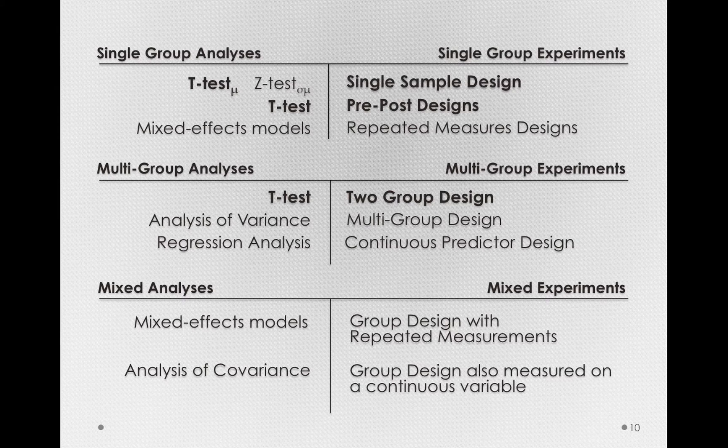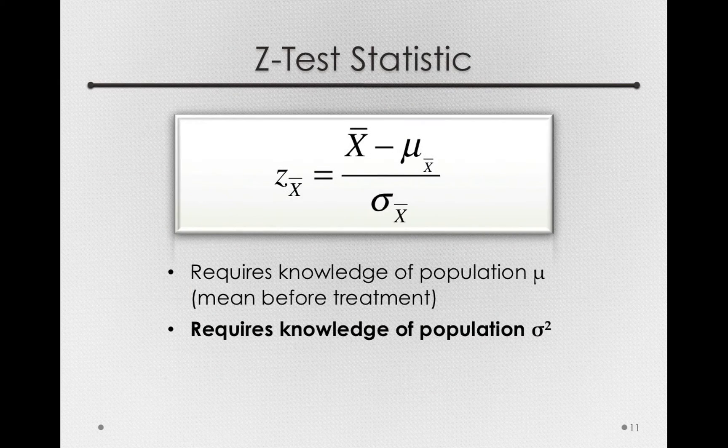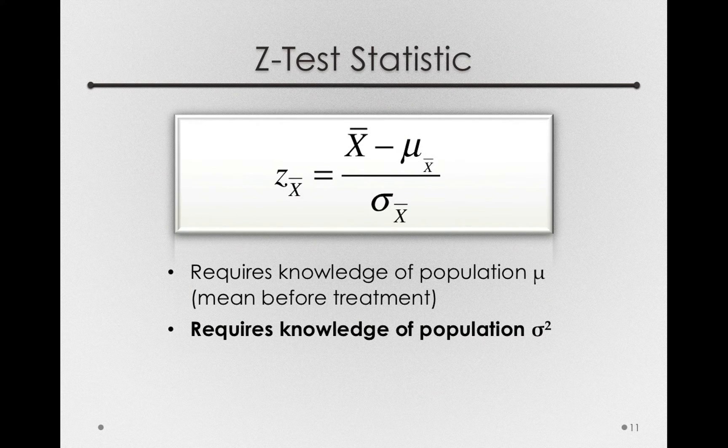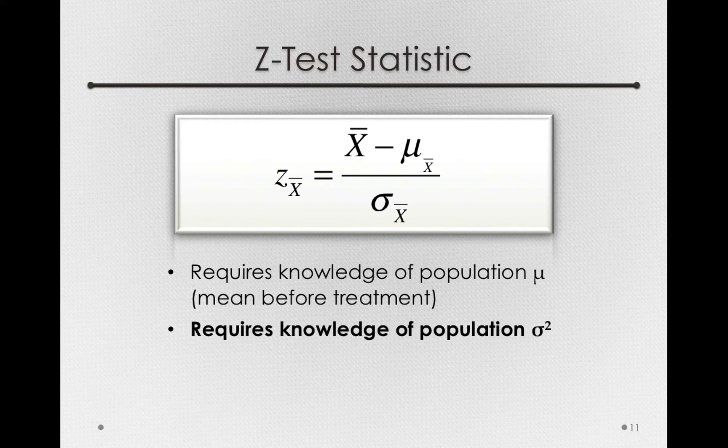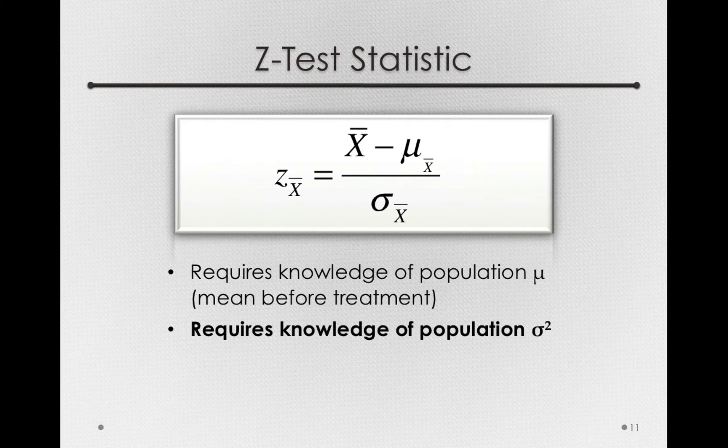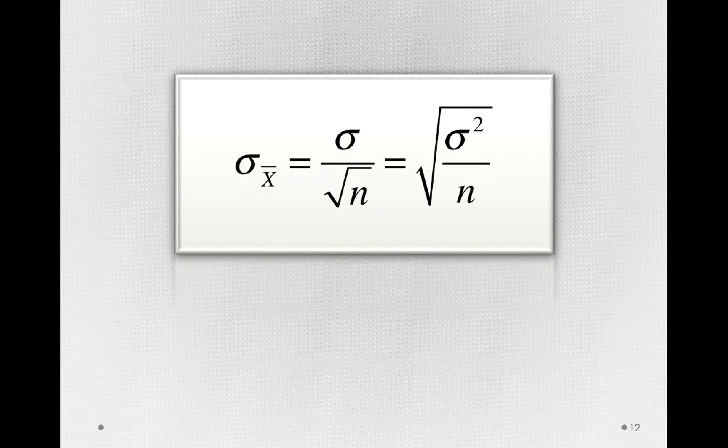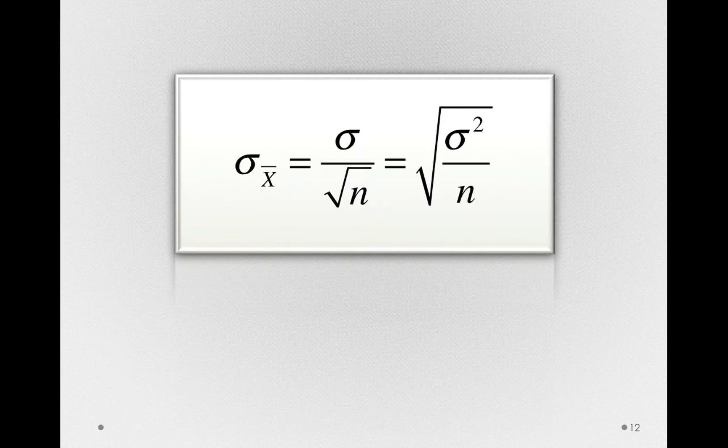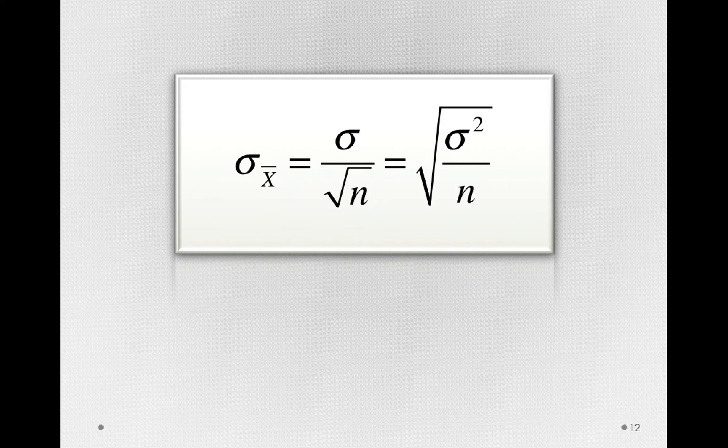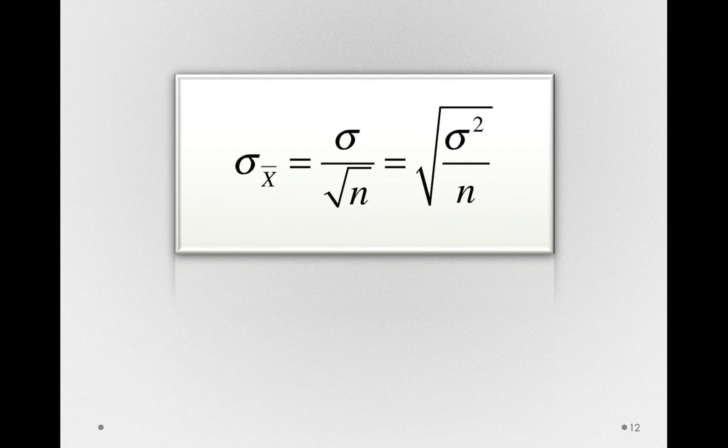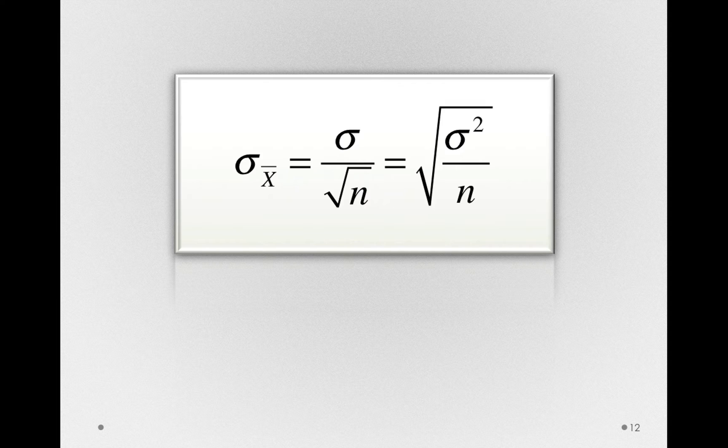So let's see what we have to change in order to use this different type of test statistic. Our z-test statistic needed to know the population variance or standard deviation before we can carry out the actual test. This was because we needed to calculate the true standard error. That is, the true standard deviation of the sampling distribution of sample means.